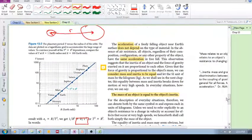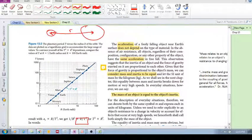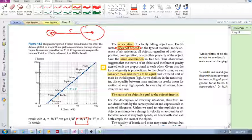So, the acceleration of a freely falling object near Earth's surface does not depend on the type of material. All objects, this is maybe counterintuitive, this is not so easy to understand, but all objects near the Earth's surface have the same acceleration in freefall.